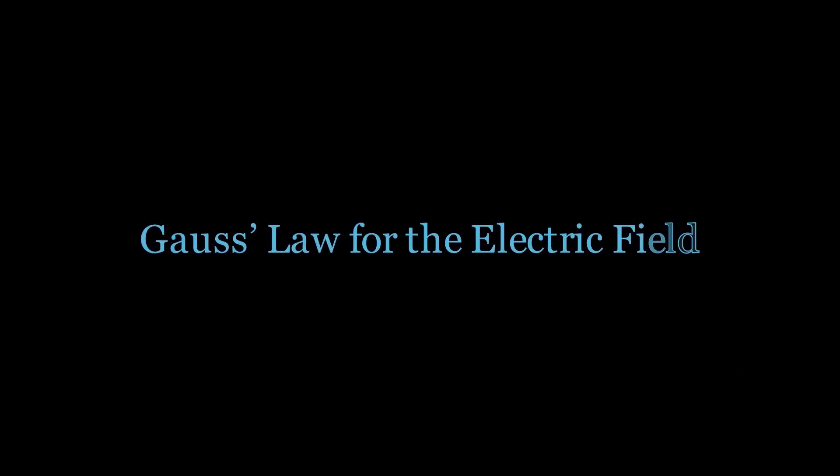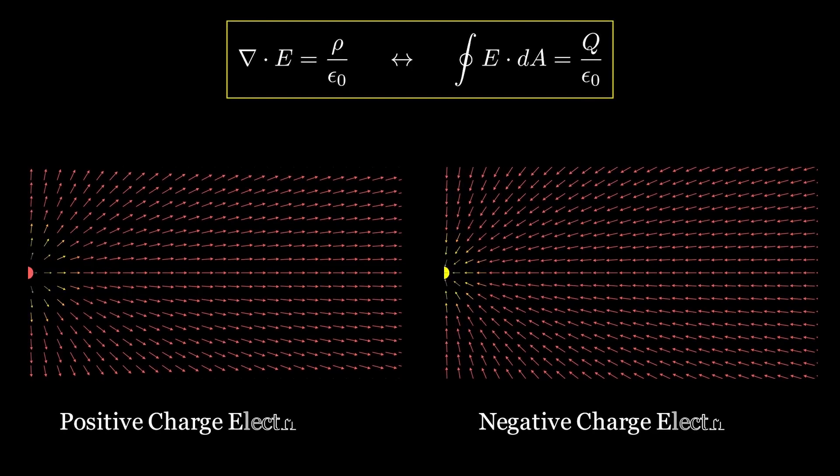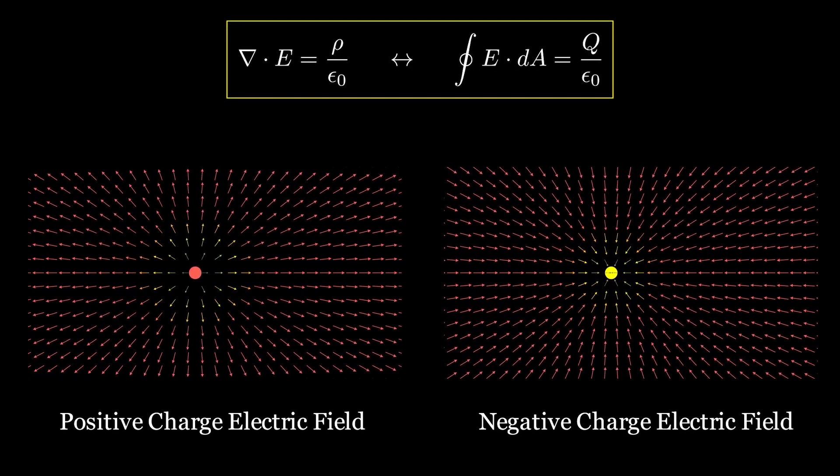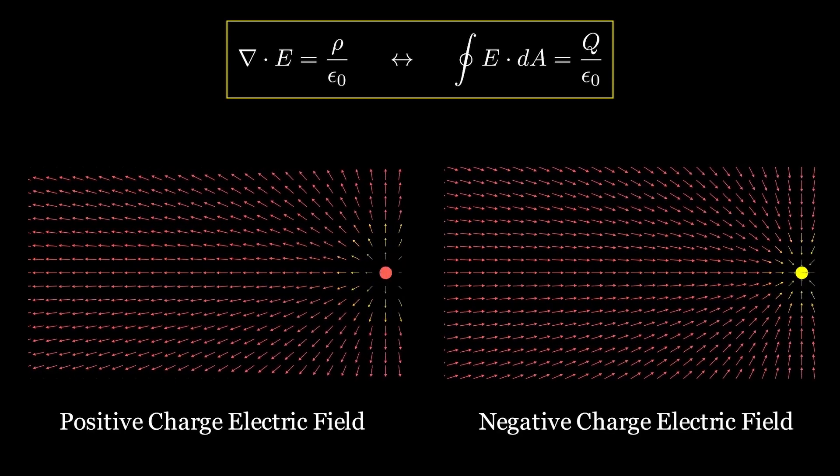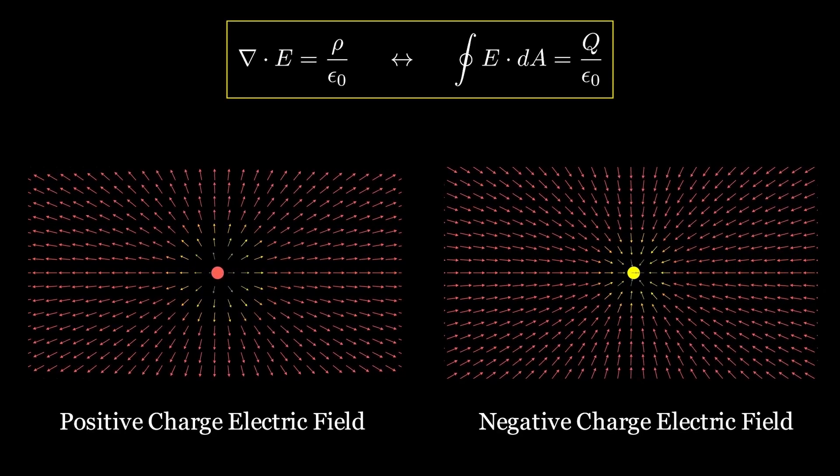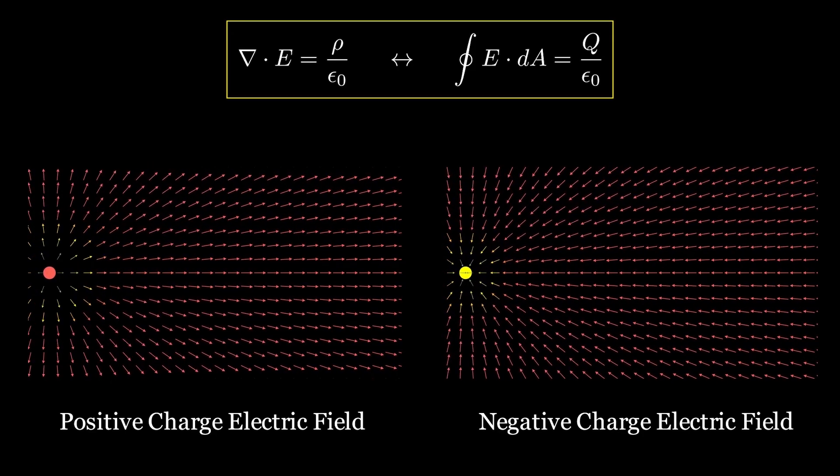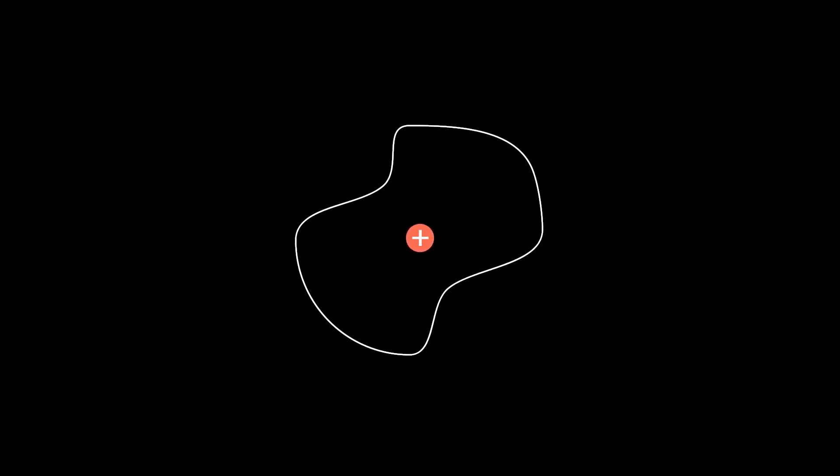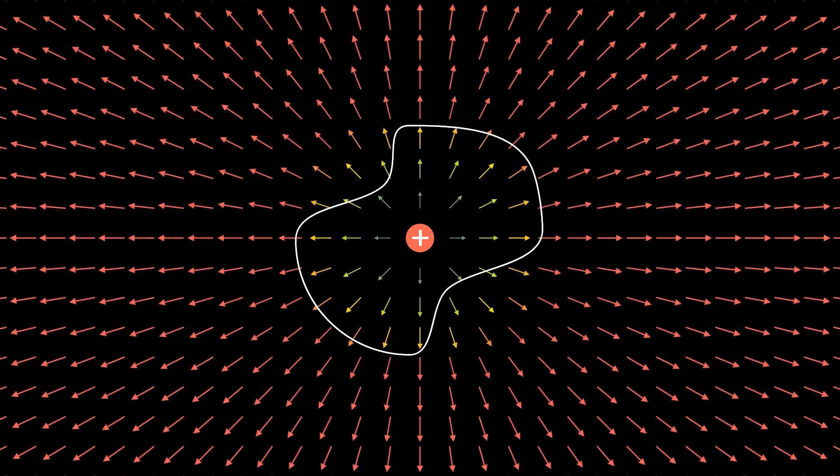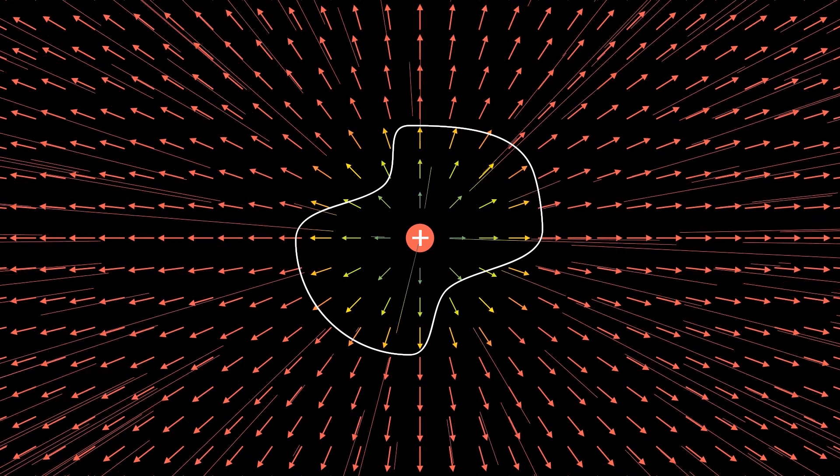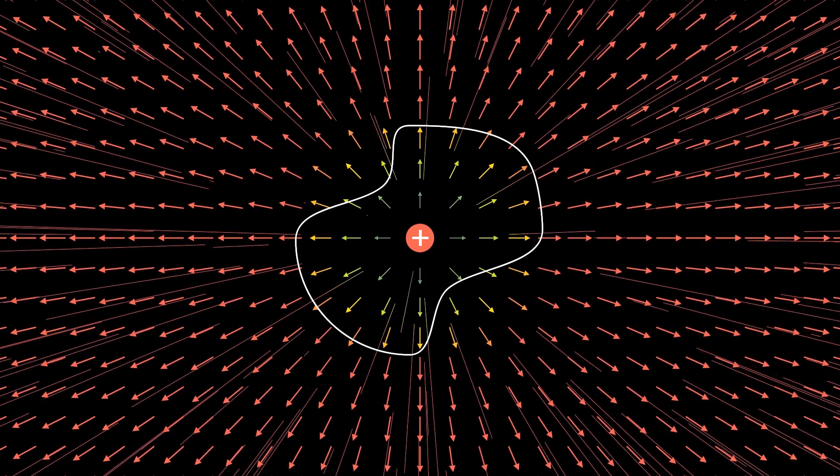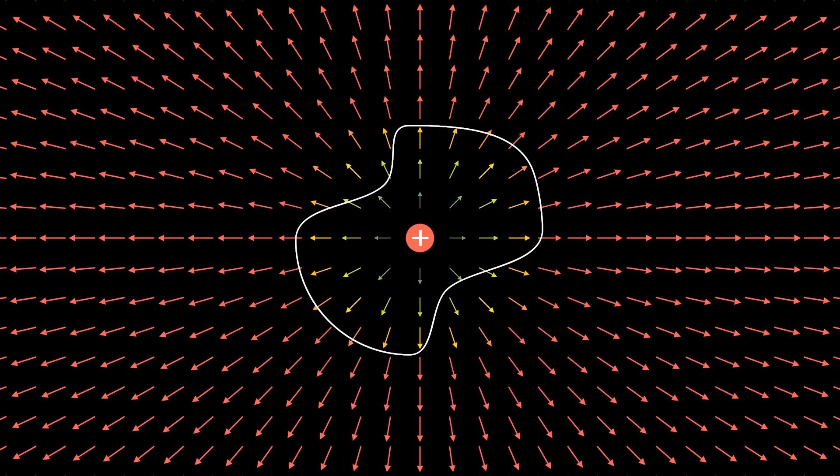Gauss's law for the electric field states that electric charges give rise to electric field in a direction based on the sign of that electric charge. Specifically, the electric flux emanating from a closed surface is equal to the charge enclosed by that surface. Consider a closed surface with some charge distribution within it. From Gauss's electric field law, this electric charge generates electric field and the flux of that field is proportional to the total charge contained within that surface. Flux of a vector field is the amount of field passing through the closed surface.